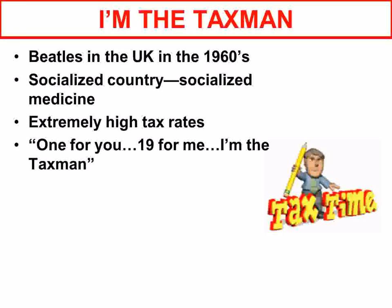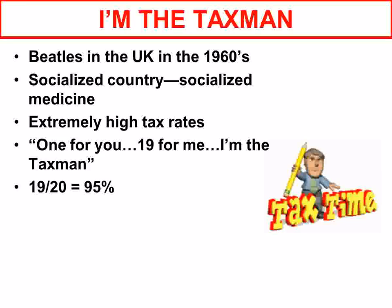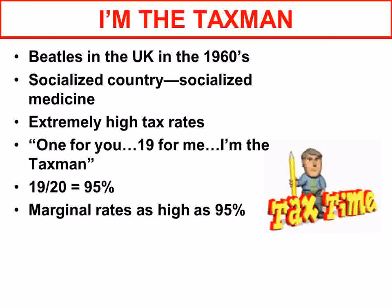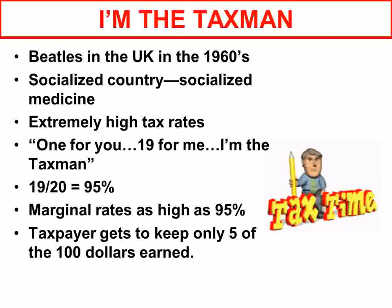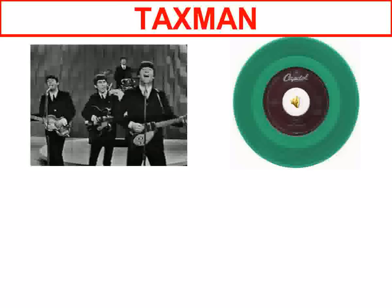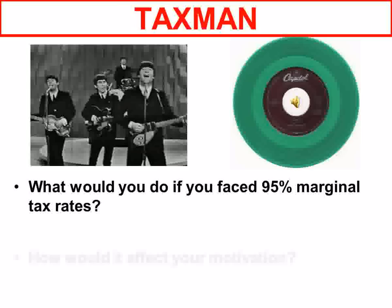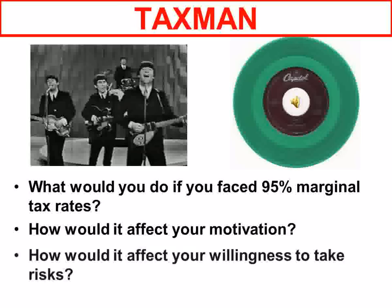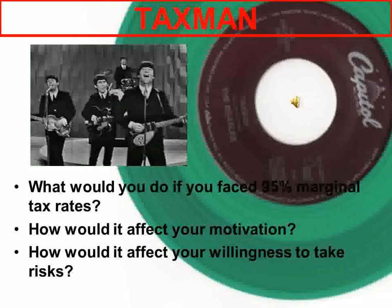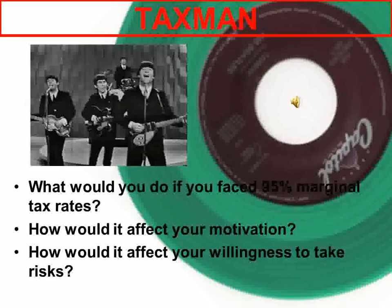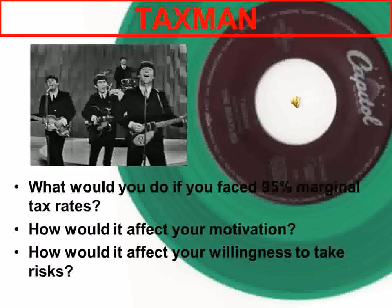The lyrics go: 'One for you, 19 for me. I'm the tax man.' It's written from the point of view of the tax man, which means the tax man is taking 95% of your income. I ask the students: what would that do to your motivation? There are the Beatles on Ed Sullivan, a Tax Man Green Vinyl 45, and that question. Then I play the song — you might be able to hear it in the background. In the interest of time, I'll stop it.